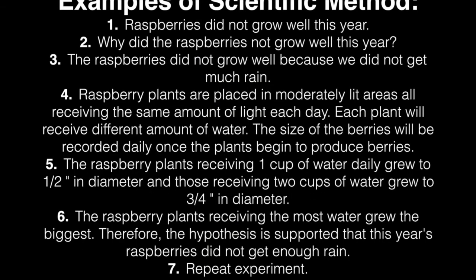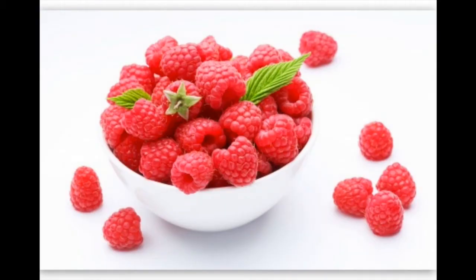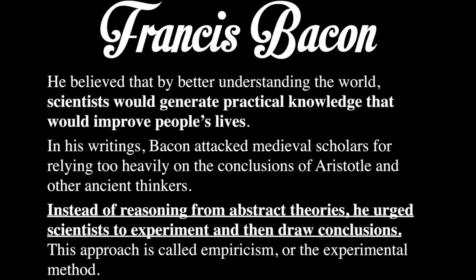Here's a quick example of the scientific method using raspberries. My hypothesis is: raspberries that receive more water will grow bigger. So I have two sets of raspberries — one receiving two cups of water a day and one receiving one cup a day. After a month, I see how they've changed in size. If the ones with more water have grown larger, my hypothesis is correct. If they're the same size — or the ones with less water grew bigger — my hypothesis is incorrect and I go back to the drawing board. The key word here is: experiment, experiment, experiment.